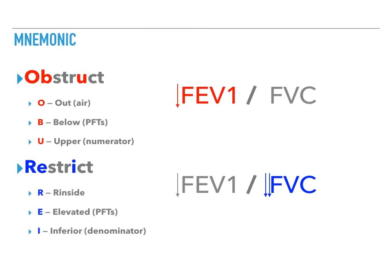The O stands for out, telling you that it's harder to get air out in an obstructive lung disease. The lungs look hyperinflated. If you ever look at a chest x-ray, they're going to be hyperinflated because it's harder to get air out. There's going to be increased space between the ribs because there is so much air being trapped inside. The B stands for below. The PFTs drop below or they decrease. What is driving it? The upper. That's what U stands for. The upper number or the numerator. So the FEV1 is decreased and the FVC really doesn't change that much. So you have a small numerator over an unchanged denominator. That's going to give you a decreased ratio.